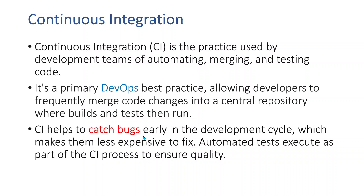CI helps to catch bugs early in the development life cycle, which makes them less expensive to fix. The earlier a bug is found, the less time and cost it takes to fix. If you find a bug at the very last minute, it is going to be very costly and tedious to fix. Continuous Integration helps by automating tasks, and through frequent releases and frequent builds it tries to catch bugs as early as possible, which is very beneficial for a team.